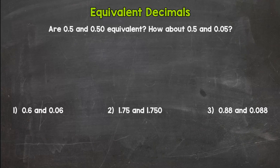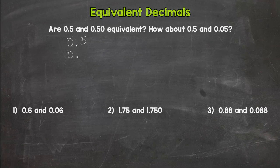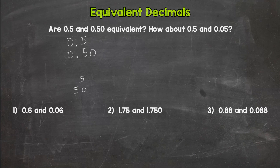The first thing we want to start with is the word equivalent — what does it mean? Hopefully you are thinking of the word equal: two things that have the same value, worth the same thing. Now you might be thinking a five and a fifty don't share the same value. That would hold true for whole numbers — five bucks and fifty bucks are definitely not the same value — but decimals are a little bit different than whole numbers.